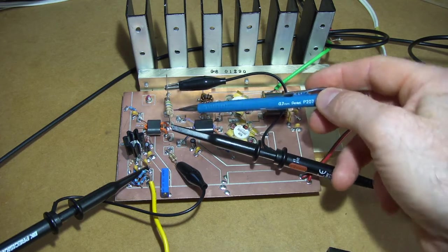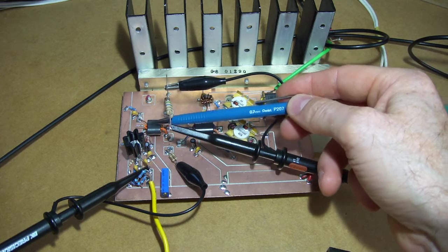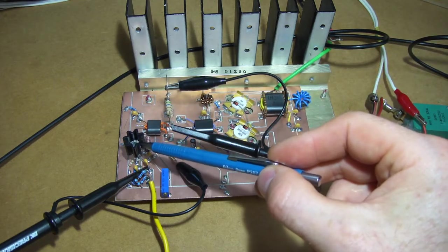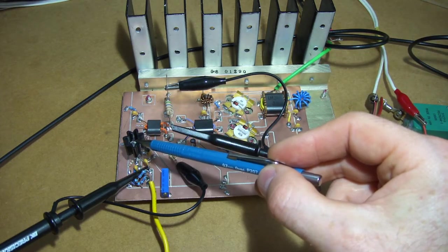So that 3 ohms now being transformed back, and should be presenting to the collector of this transistor, around 200 ohms.